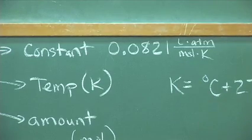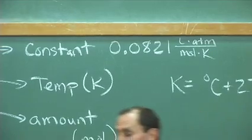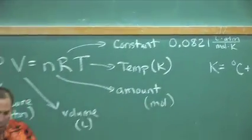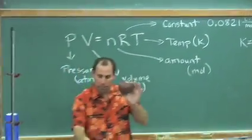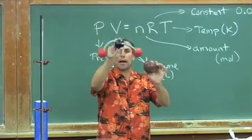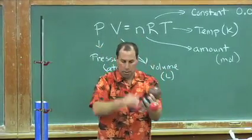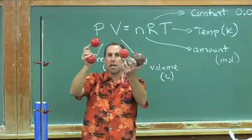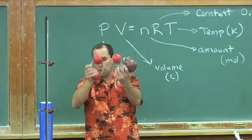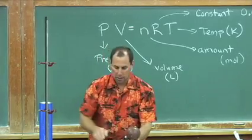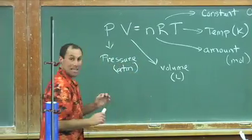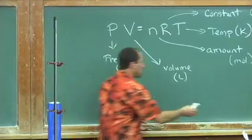Solving problems becomes pretty ideal. We treat all gases the same — ideally. Krypton, carbon dioxide, oxygen — we treat them all the same and say that they occupy a very, very small volume. The gas itself. Let's solve a problem.